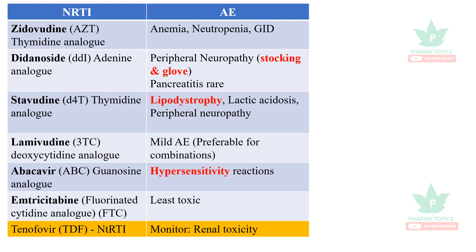Stavudine is a thymidine analog; its most important adverse effects are lipodystrophy, lactic acidosis, and peripheral neuropathy. Lamivudine has mild adverse effects and is preferable for combination therapy. Abacavir is a guanosine analog; its most important adverse effect is hypersensitivity — if it occurs, the drug must be stopped. Emtricitabine is a fluorinated cytidine analog, is the least toxic, and is preferred for combinations.